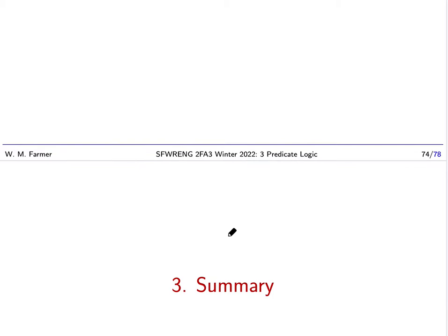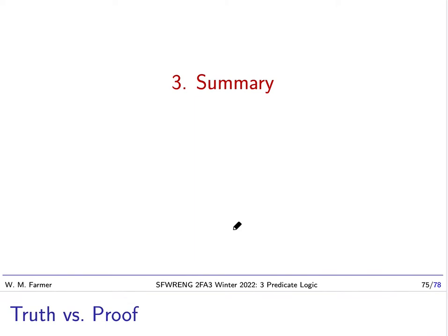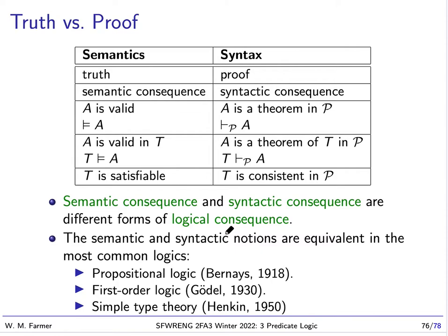Okay, so the last part of this topic, we give a summary. And I want to contrast two different kinds of notions. We have truth notions and proof notions.